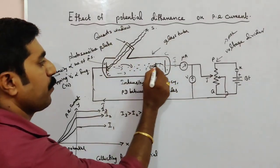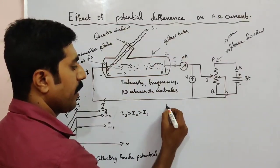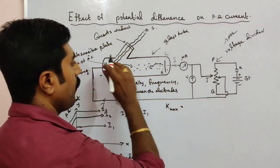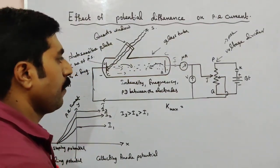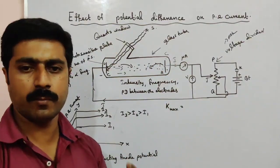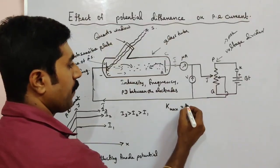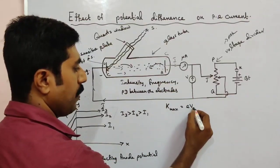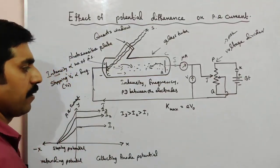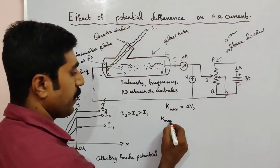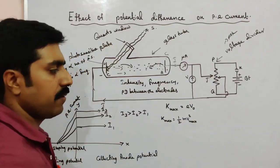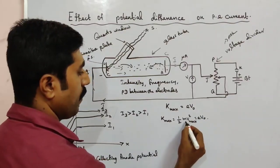The stopping potential stops the fast-moving photoelectrons. The maximum kinetic energy of these fast-moving photoelectrons is stopped by the work done by the stopping potential. The work done by the stopping potential should be equal to the maximum kinetic energy of the fast-moving electron. So kinetic energy maximum equals eV₀, and also equals one-half mv² maximum.